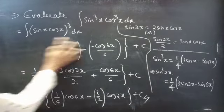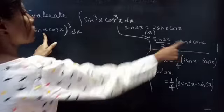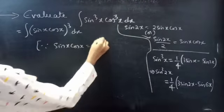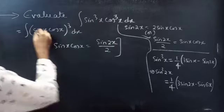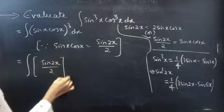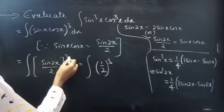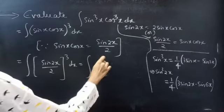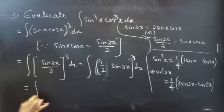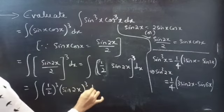Now we'll see the second formula. We'll replace sin x cos x by sin 2x/2. Since sin x · cos x = sin 2x/2, we can replace the integrand by (sin 2x/2)³ · dx. You can split this as (1/2)³ · sin³(2x) · dx.